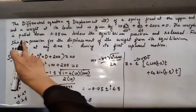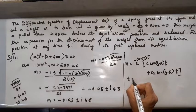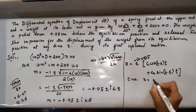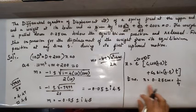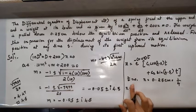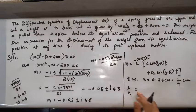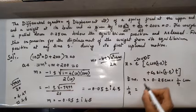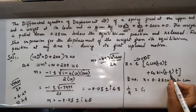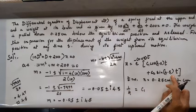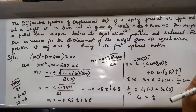The weight is pulled down 0.25 centimeters below the equilibrium position and released, so at t = 0, x = 0.25 = 1/4 cm. Substituting t = 0 into the solution: e⁰ = 1, cos(0) = 1, sin(0) = 0, so 1/4 = c₁(1) + c₂(0), giving c₁ = 1/4.